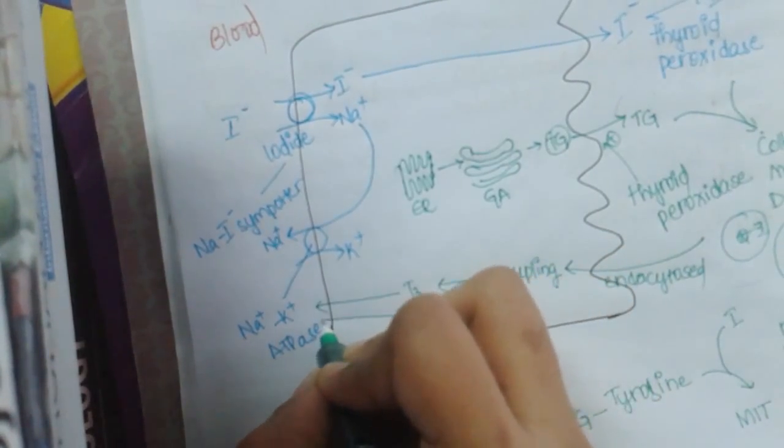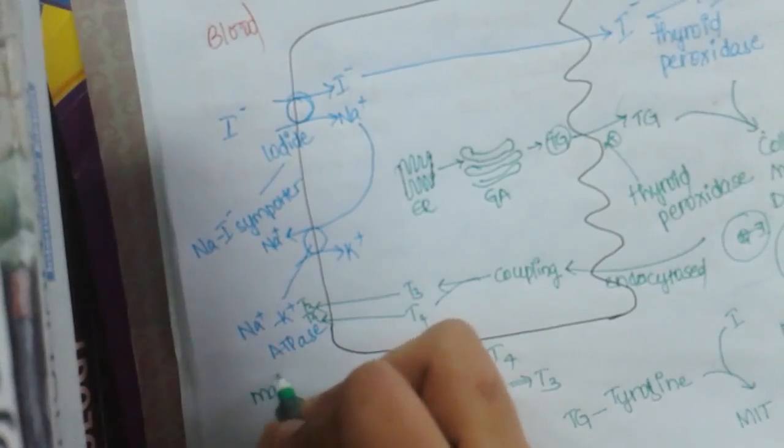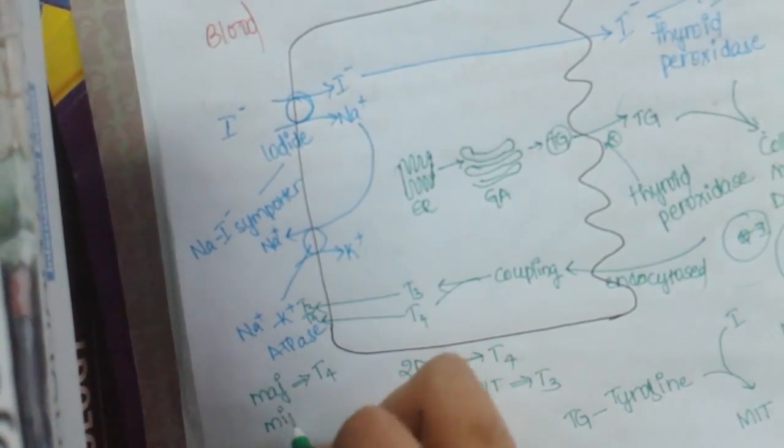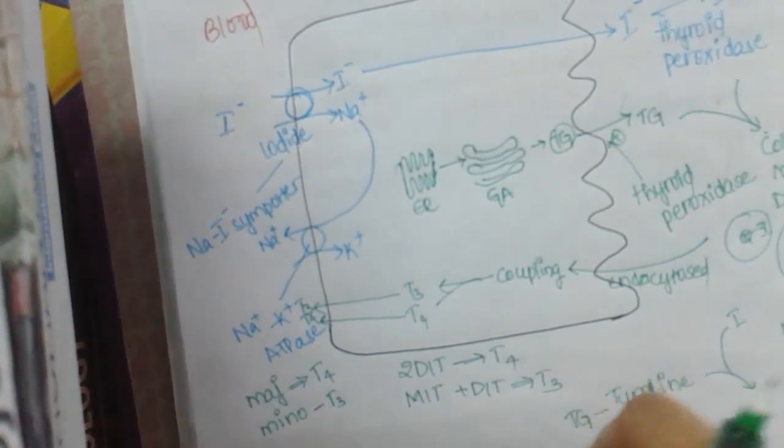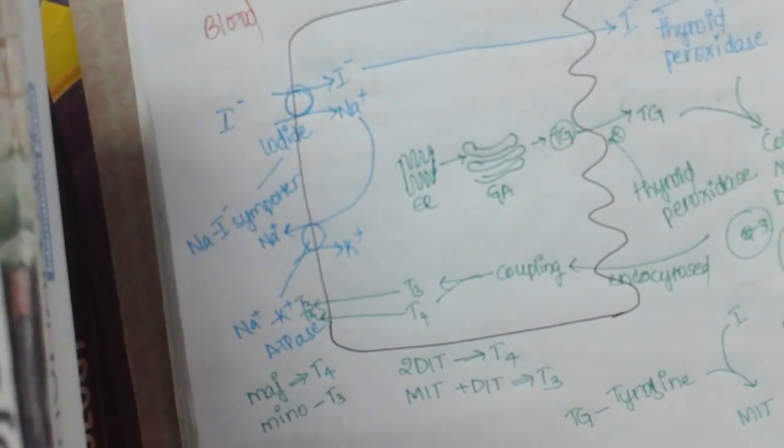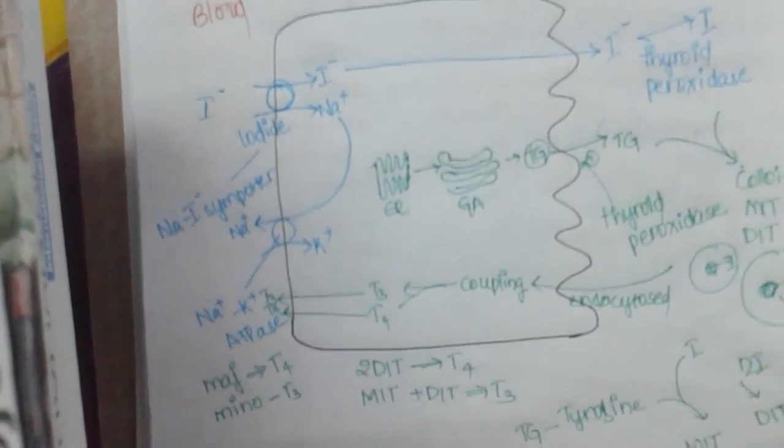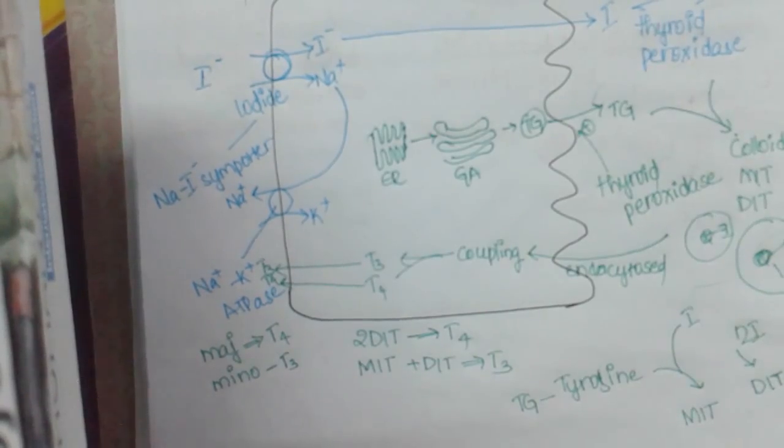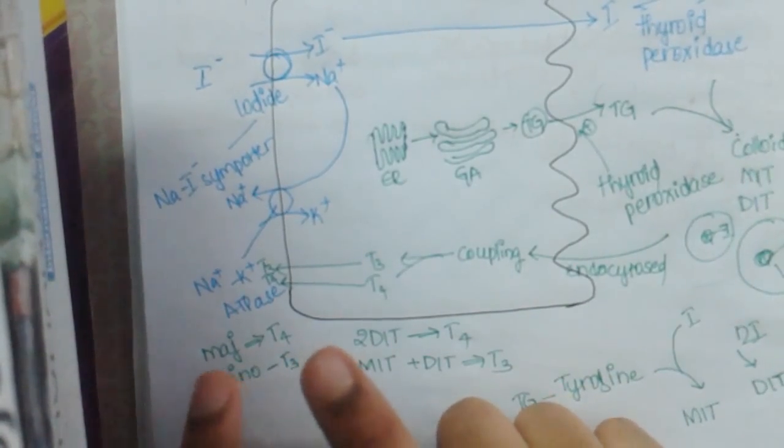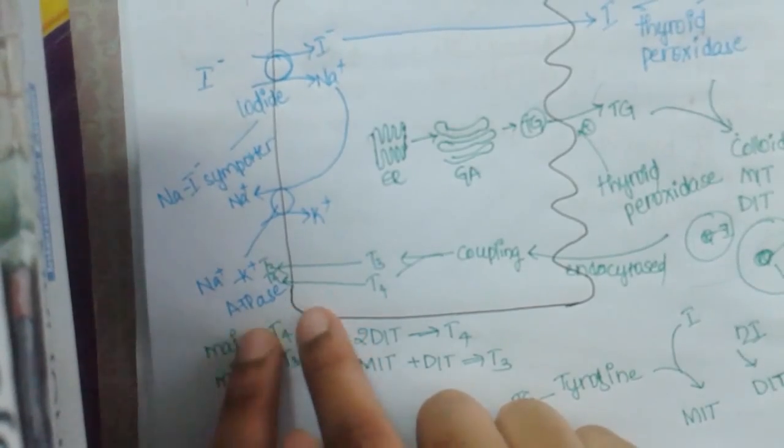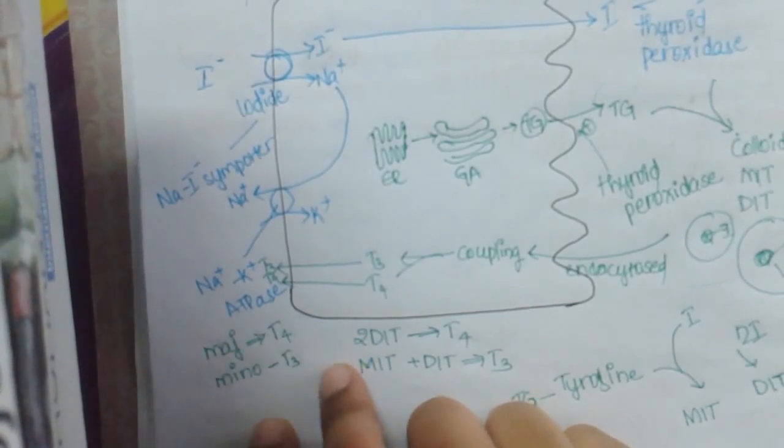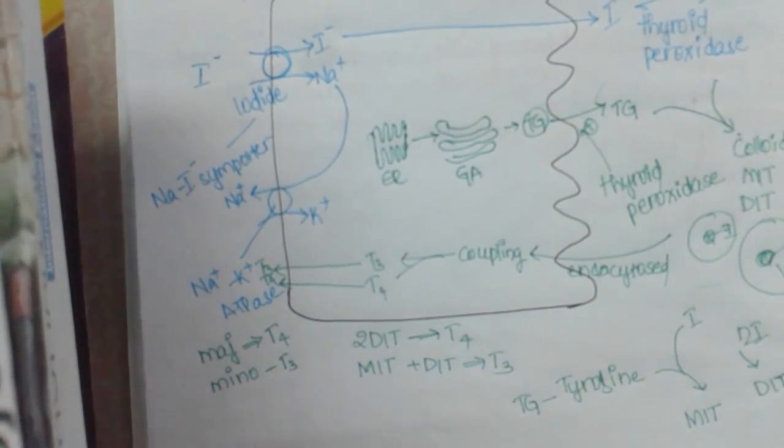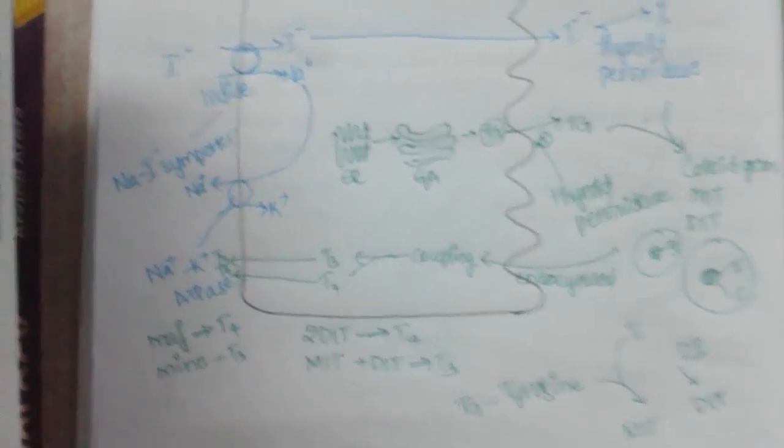So the formed T3 and T4 are exocytosed into the blood. Majority of the thyroid hormone will be in T4 form and minority will be in T3. T4 is in inactive form whereas T3 is the activated form. So whenever we need activation, T4 will be converted to T3 whenever the hormone is needed. So through this, both triiodothyronine and tetrathyroxine, that is T3 and T4, both of them are released into the blood so that it is utilized. This is the synthesis of thyroid hormones.